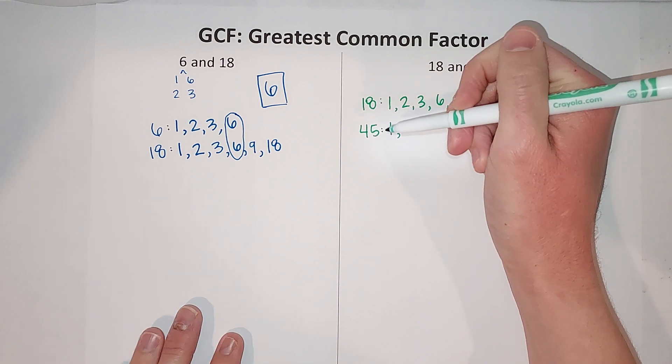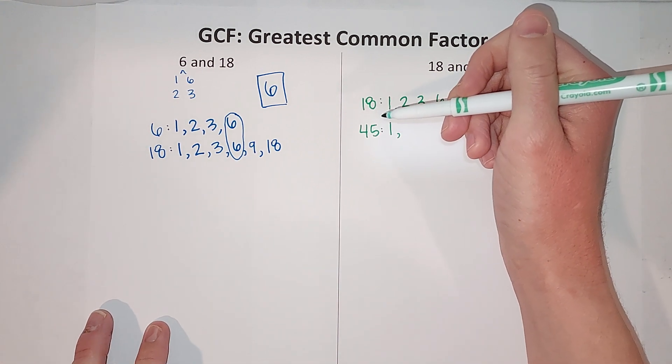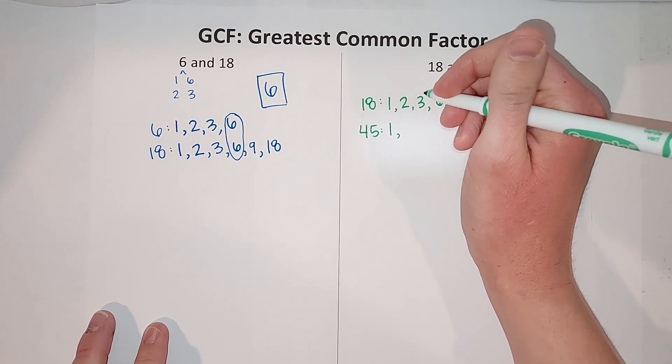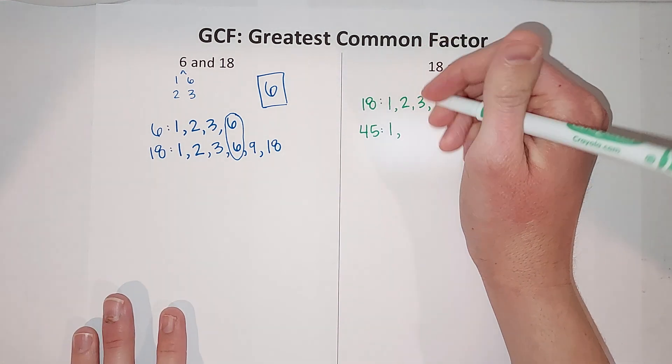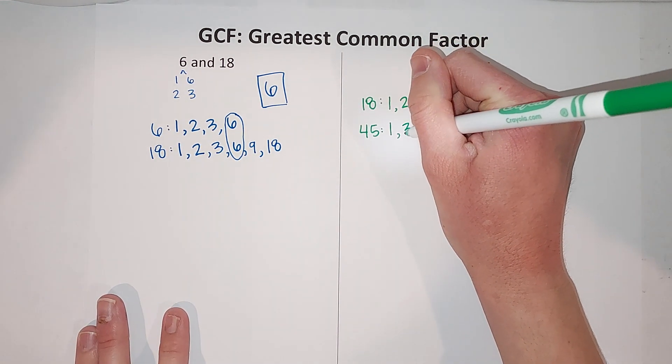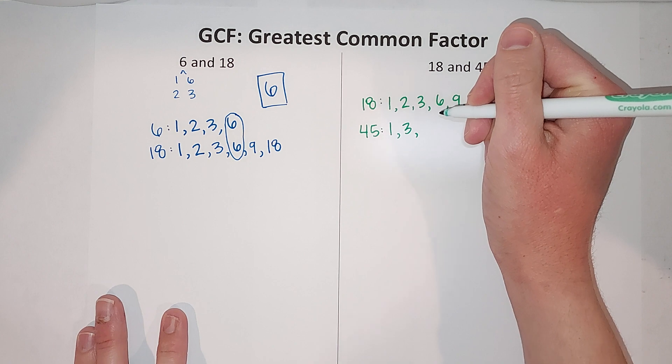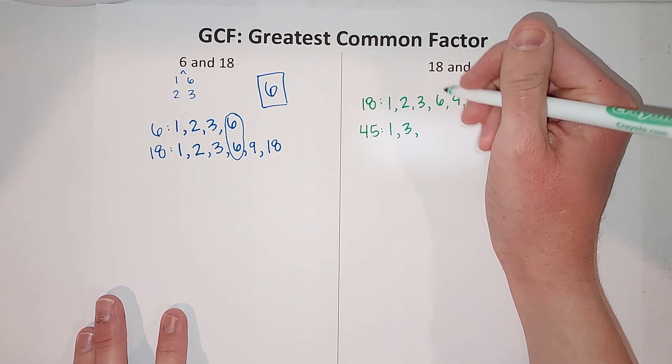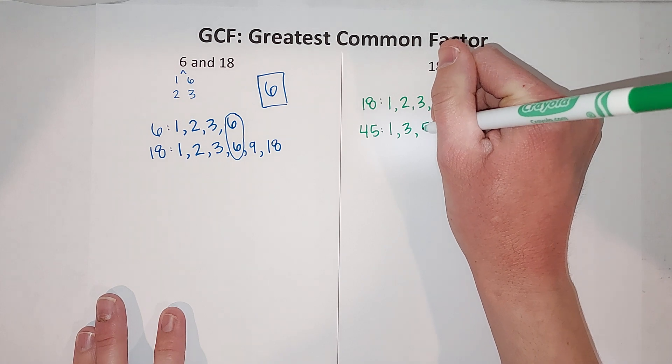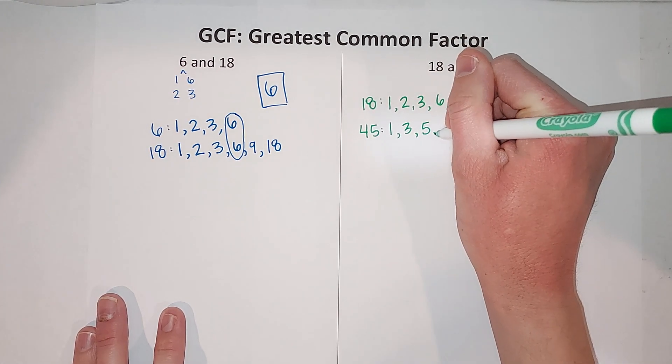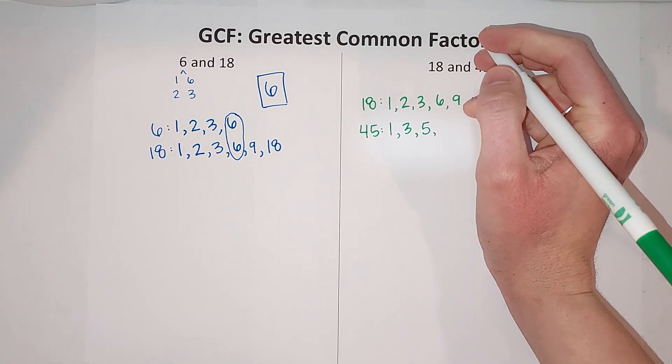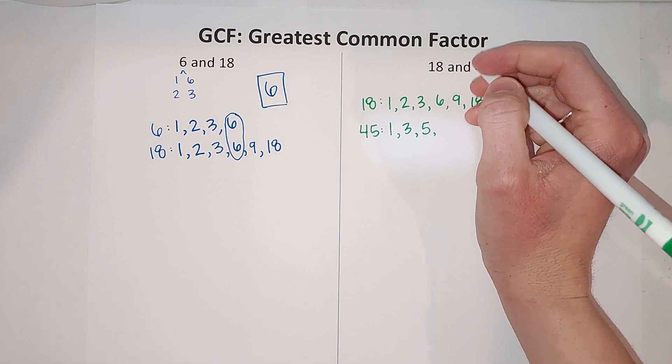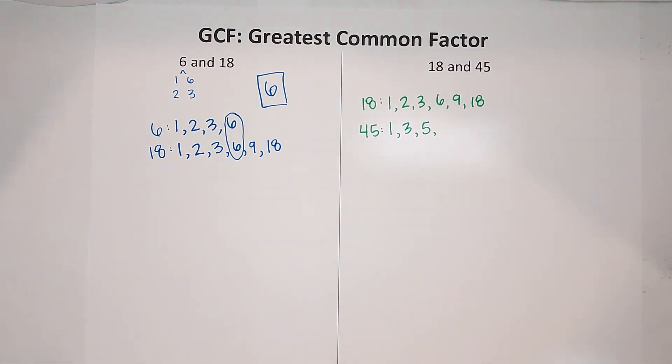2 does not go into 45 because it's not even. 3 goes into 45 fifteen times. 4 does not go in because it goes into 44 and not 45. 5 does go in—5 goes in 9 times. 6 does not go in.